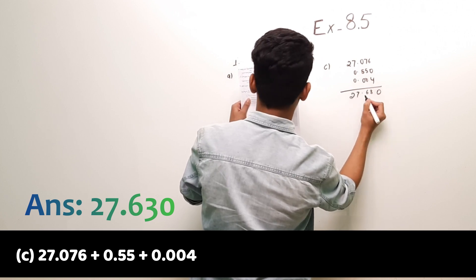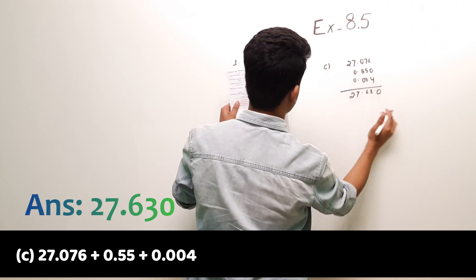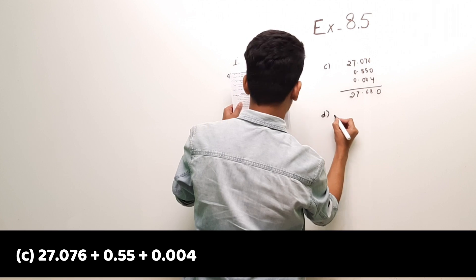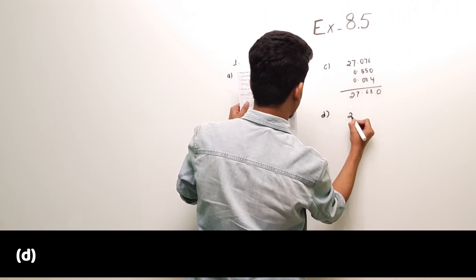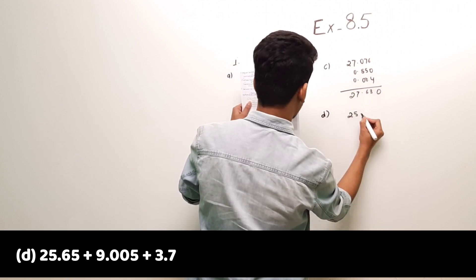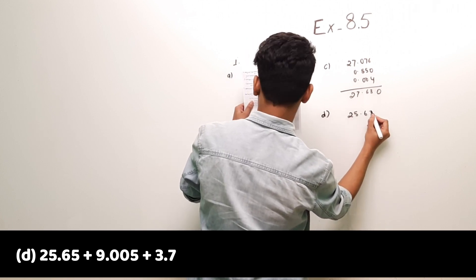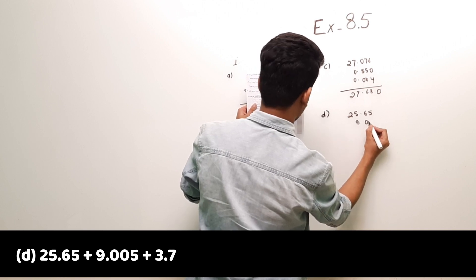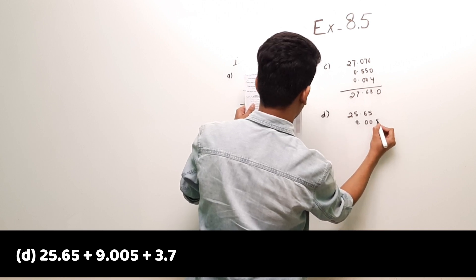Part (c): 27.076 plus 0.55 plus 0.004. The answer is 27.630.